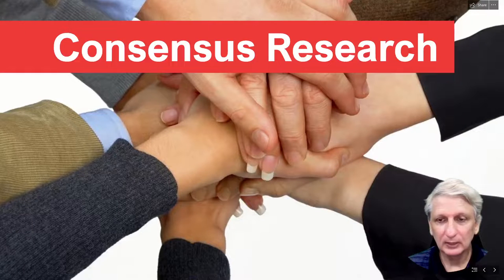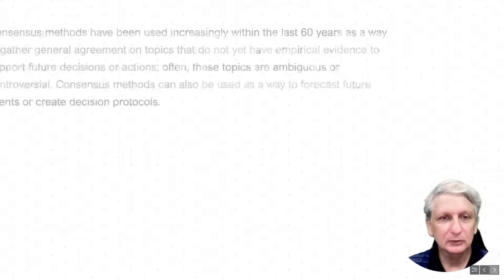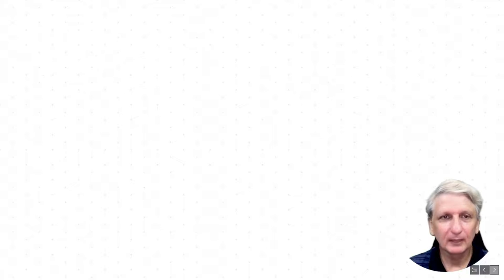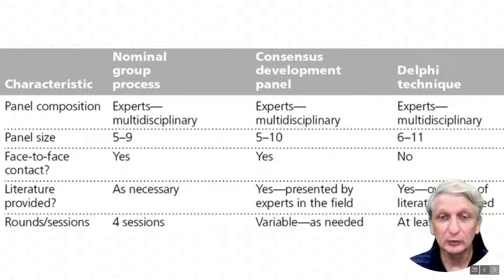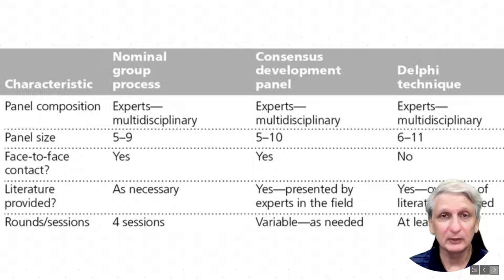The first technique is the nominal group approach. Generally speaking, there are three main approaches: the nominal group approach, consensus development panels, and the Delphi technique. Each has different advantages and disadvantages. The main approach we'll use for your assessment will be the Delphi technique, as it is certainly the most commonly used, but the other approaches may be more practical in your own employment settings for conducting research with small groups of experts.